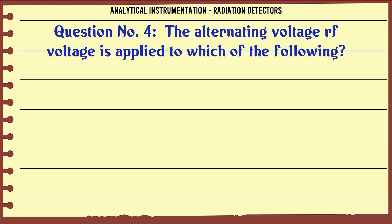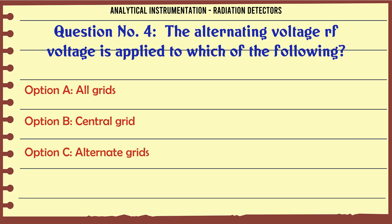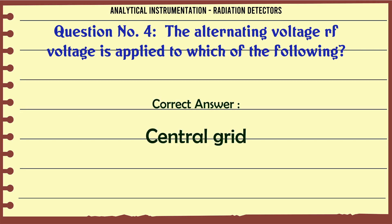The alternating voltage RF voltage is applied to which of the following? A. All grids. B. Central grid. C. Alternate grids. D. None of the grids. The correct answer is Central grid.